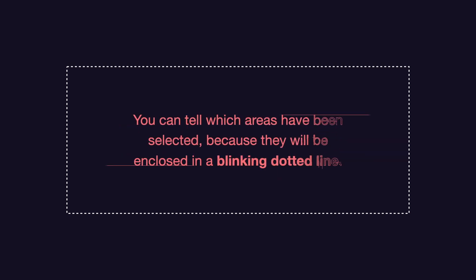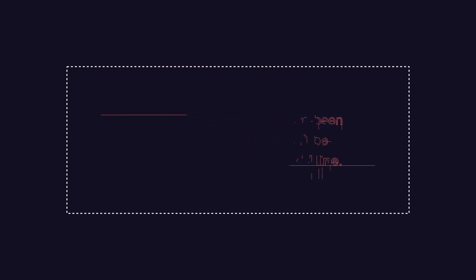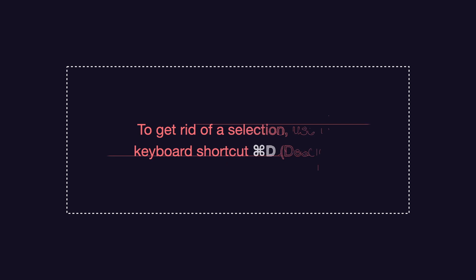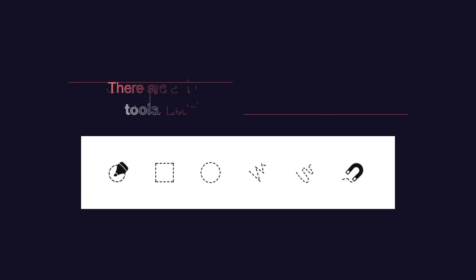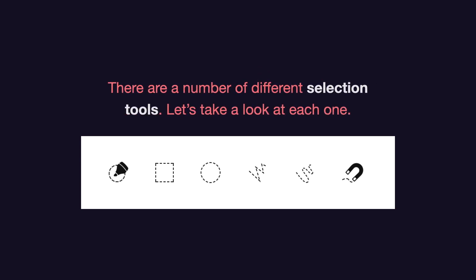You can tell which areas have been selected because they will be enclosed in a blinking dotted line — some people say it looks like a row of marching ants. To get rid of a selection and make the blinking dotted line go away, use the keyboard shortcut Command-D to deselect. There are a number of different selection tools in Pixelmator Pro, so let's take a look at each one.